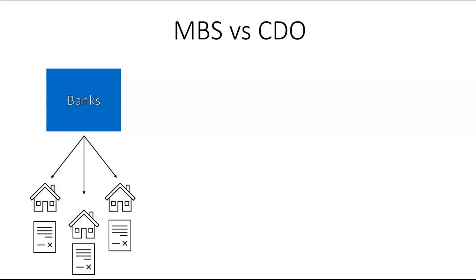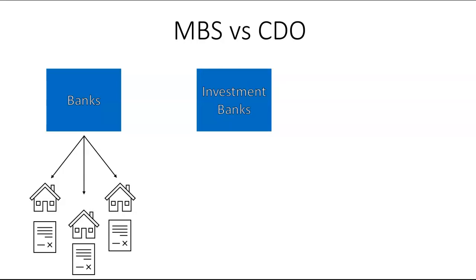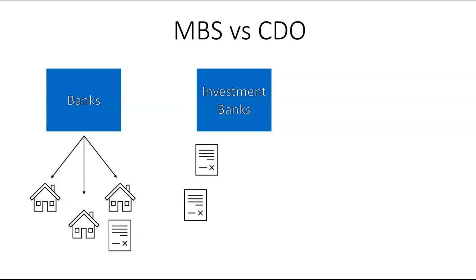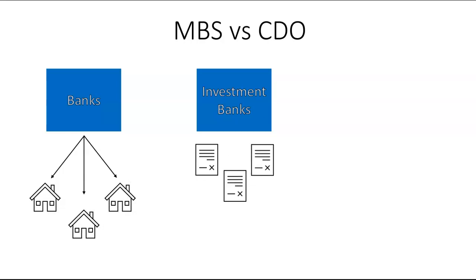Banks were also limited in how many loans they could make based on a fraction of their deposits. Then someone — investment banks like Bear Stearns, Lehman Brothers, JP Morgan Chase — got an idea: what if we buy the mortgages from the banks? From the bank's perspective, they could sell the mortgages for a profit, get them off their books, and be free to make more loans. The investment bank gets a bunch of assets generating a steady stream of income — the monthly mortgage payments homeowners are making.